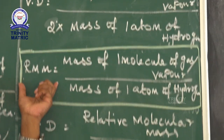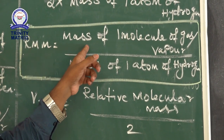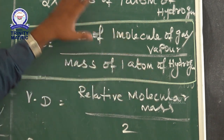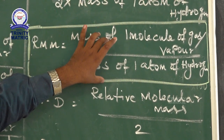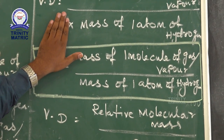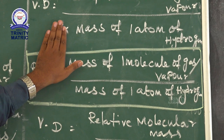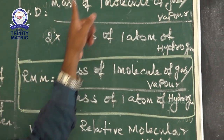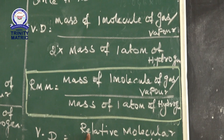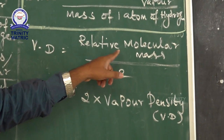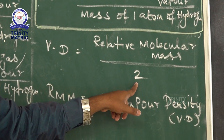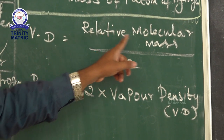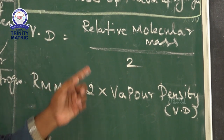Comparing the definition of RMM — mass of one molecule of gas at STP to mass of one atom of hydrogen — with vapor density, the expressions are almost identical except for the factor of 2. Therefore: vapor density = RMM ÷ 2, or equivalently, relative molecular mass = 2 × vapor density.